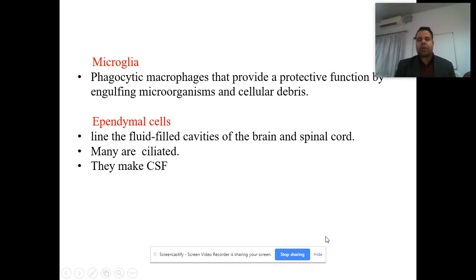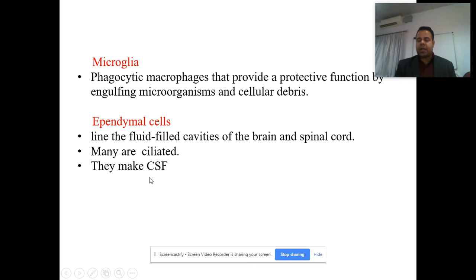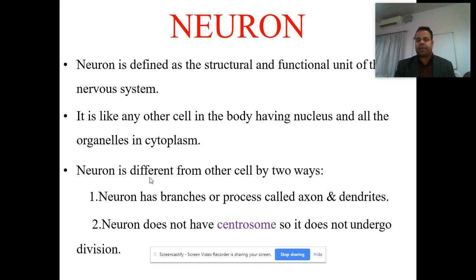Then there are microglial cells. These are phagocytic macrophages that provide a protective function by engulfing microorganisms and cellular debris. Then there are ependymal cells, which line the fluid-filled cavities of the brain and spinal cord. Many are ciliated and help produce the cerebrospinal fluid, or CSF.